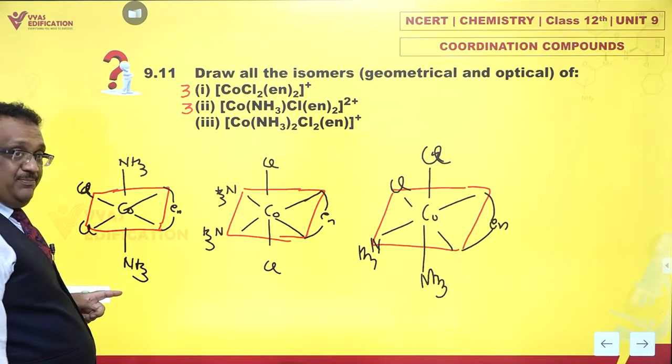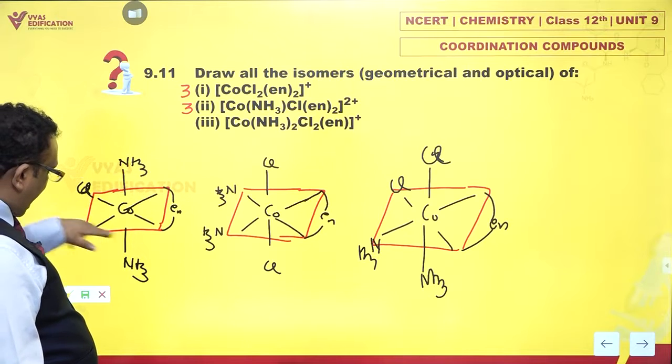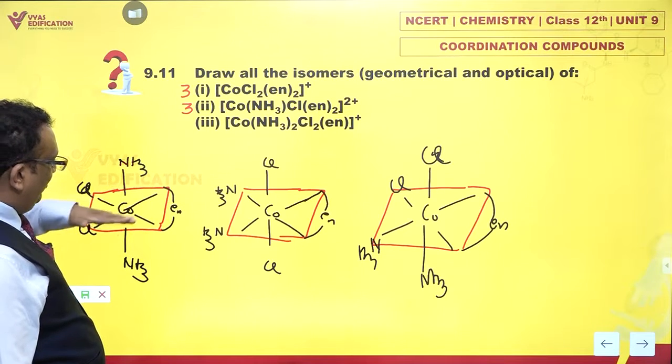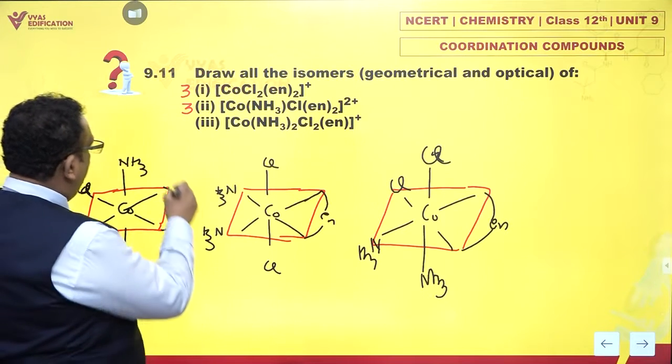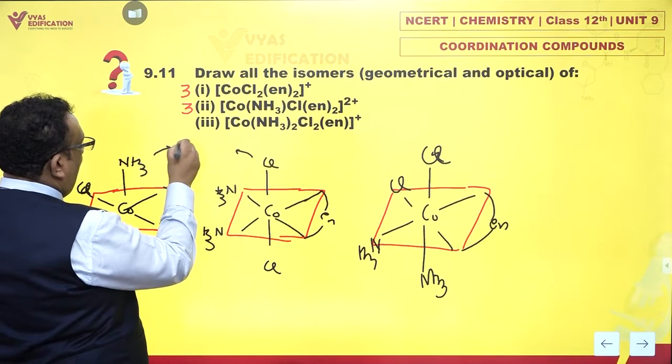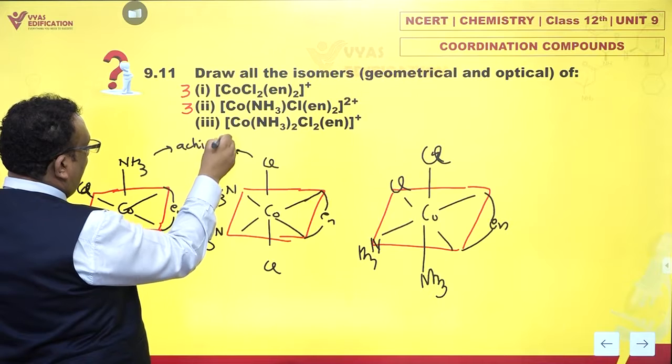Does this possess a plane of symmetry? Yes, the red square is a plane of symmetry. Why? Because top and bottom are same. Again, top and bottom same. So this is the plane of symmetry. Both of them are achiral.